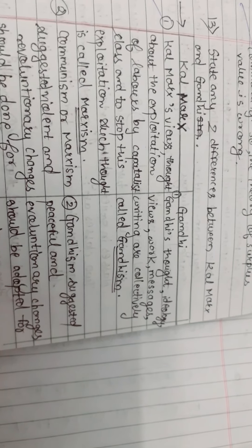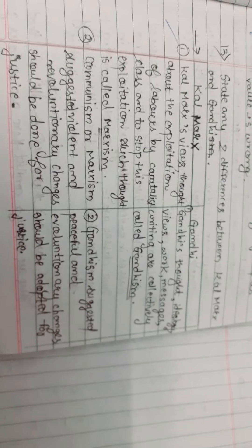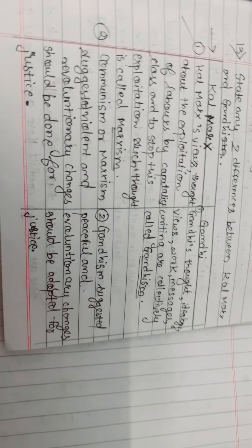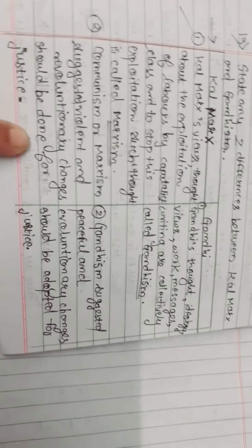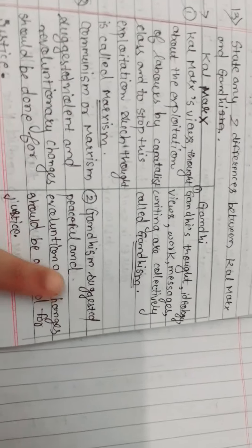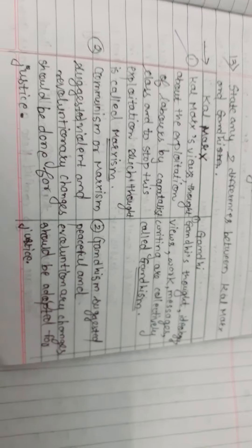Gandhi's thoughts, ideology, views, works, messages, and writings are collectively called Gandhism. Communism or Marxism suggested violent and revolutionary changes should be done for justice, and Gandhism suggested peaceful and evolutionary changes should be adopted for justice.